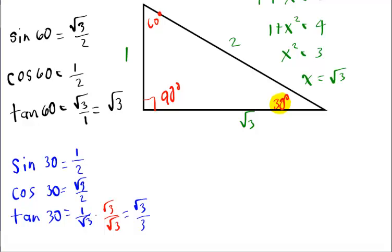So, here's the sine, cosine, and tangent of 60. And the sine, cosine, and tangent of 30. And since we know sine, cosine, and tangent.